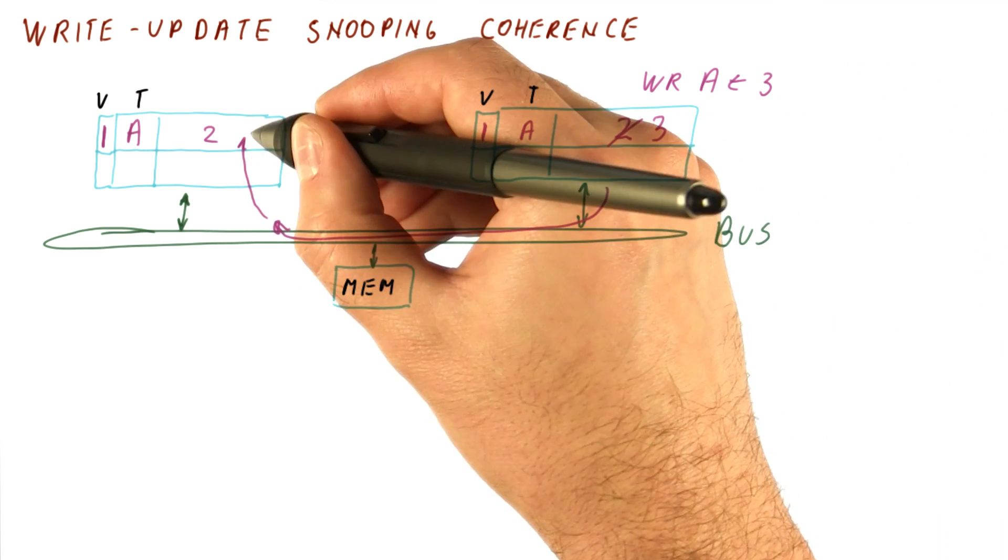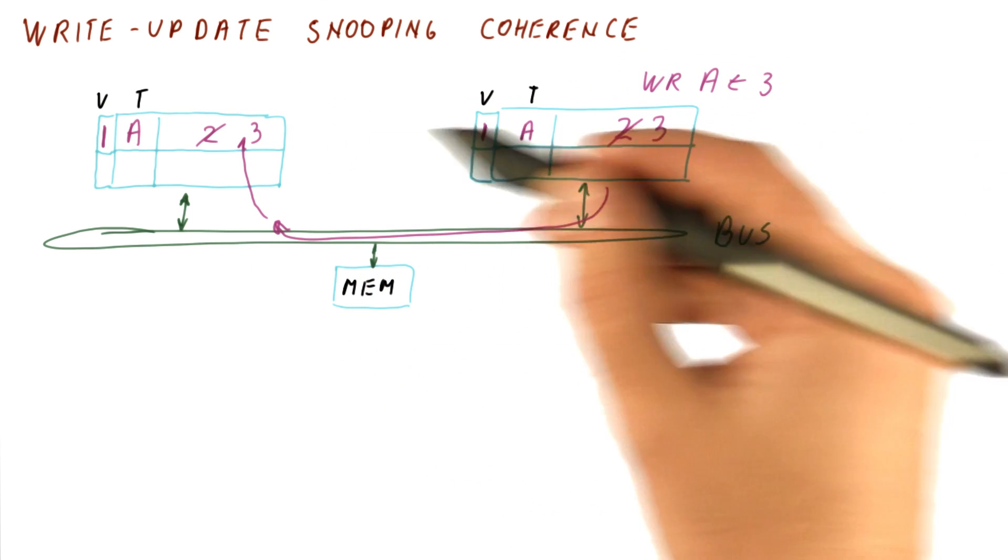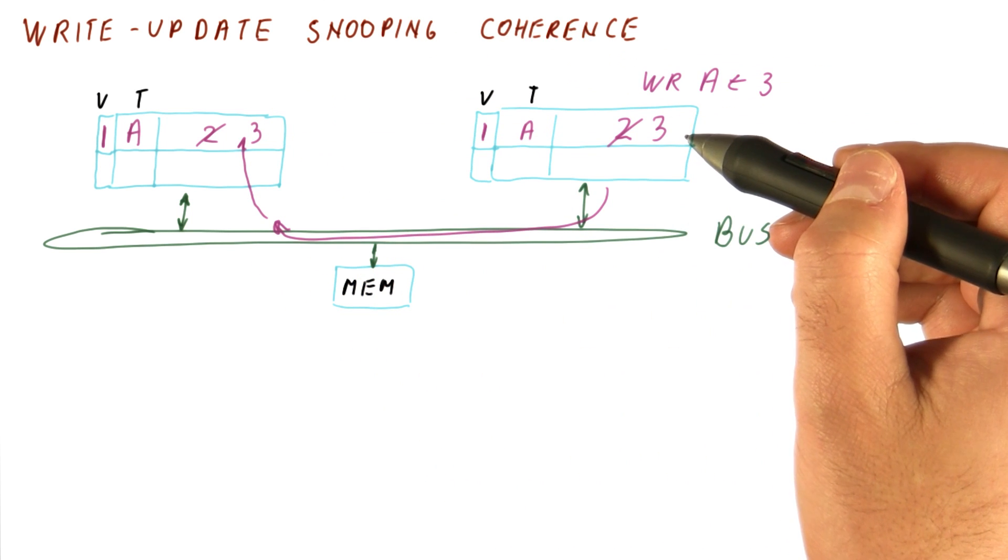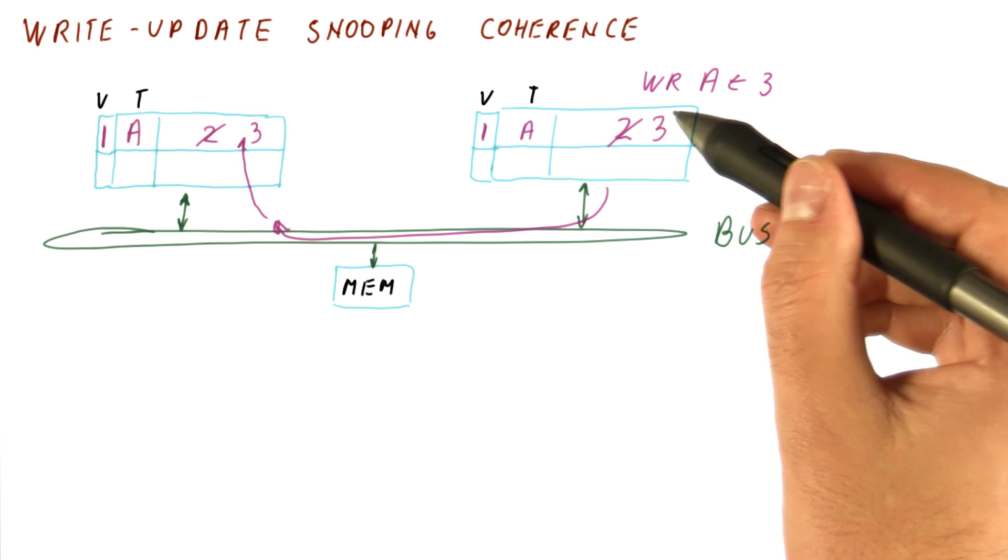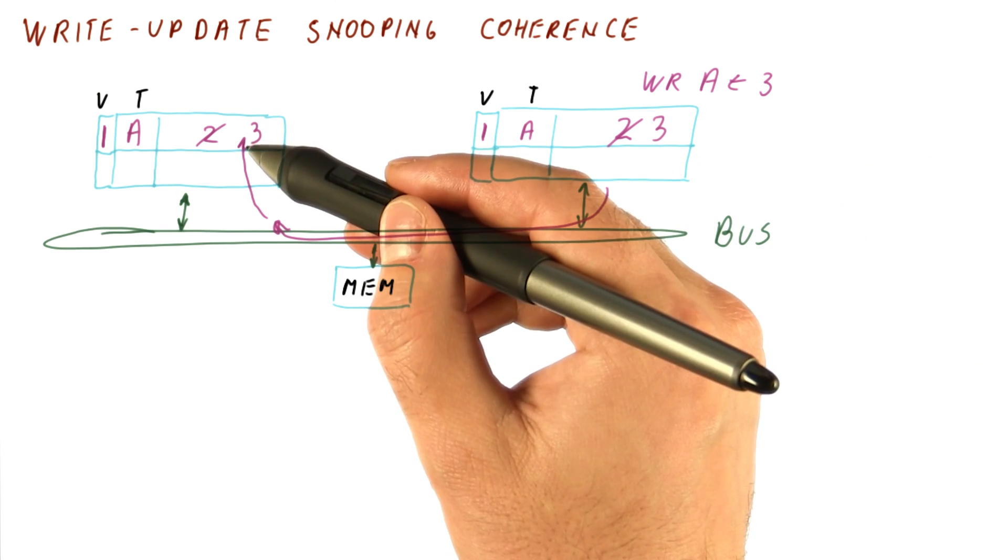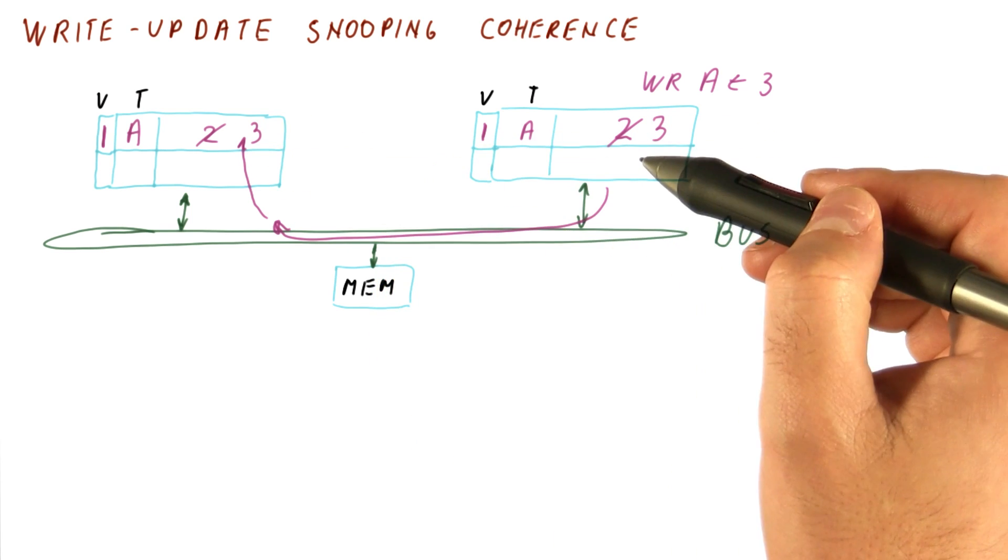We broadcast that here, and it gets here. As you can see, both of them agree which write was first and which was second. Obviously, the one that wrote three was the second one, because that's the last value we kept.